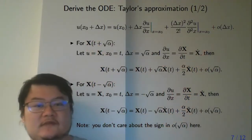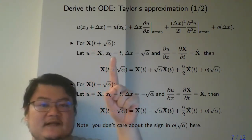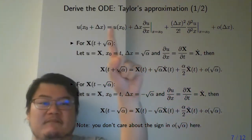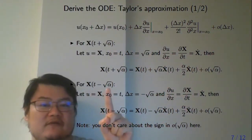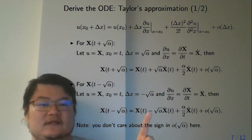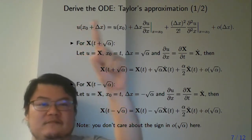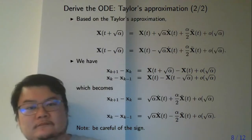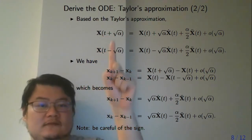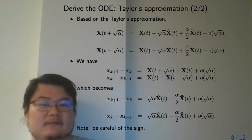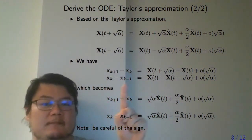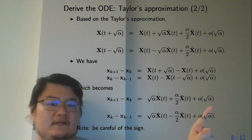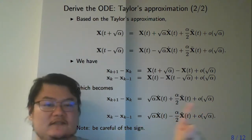For the Taylor approximation, you let u be x, x0 be t, and the change be square root alpha. Then you get this expression — it is just a copy and paste of the Taylor series. Similarly, for t minus square root alpha, the change is negative, so you get a negative sign. These two terms then have their ODE expressions. The finite difference terms are now approximately equal to these expanded terms. Since we collect the O(square root alpha) terms as high-order remainders, these become equal in the limit.